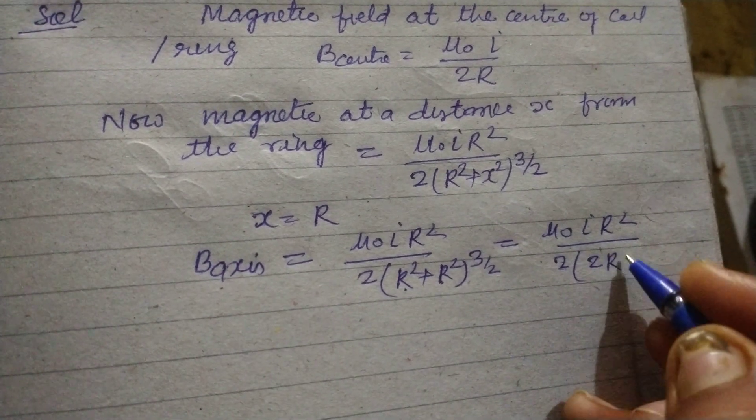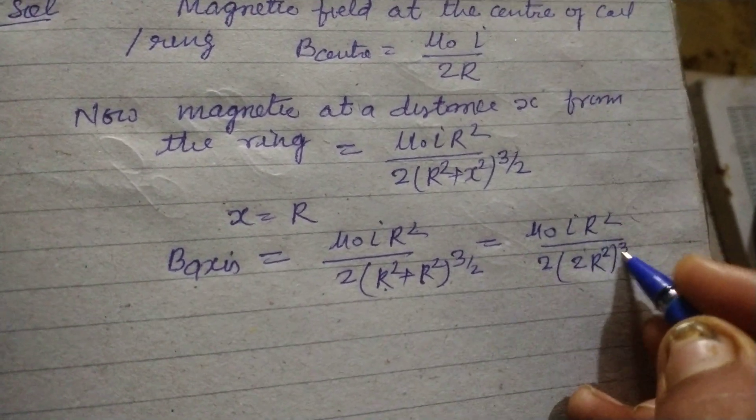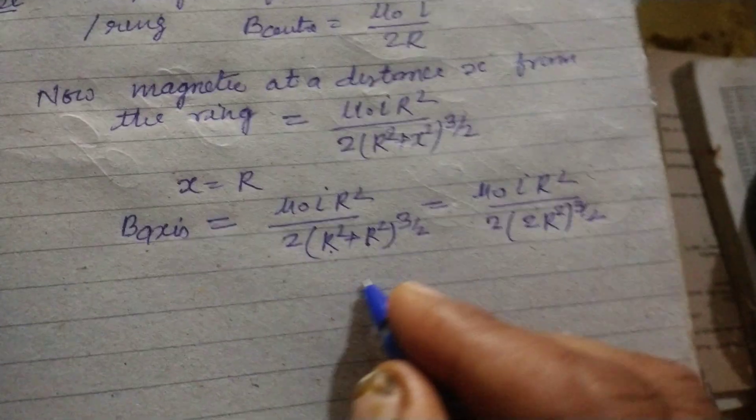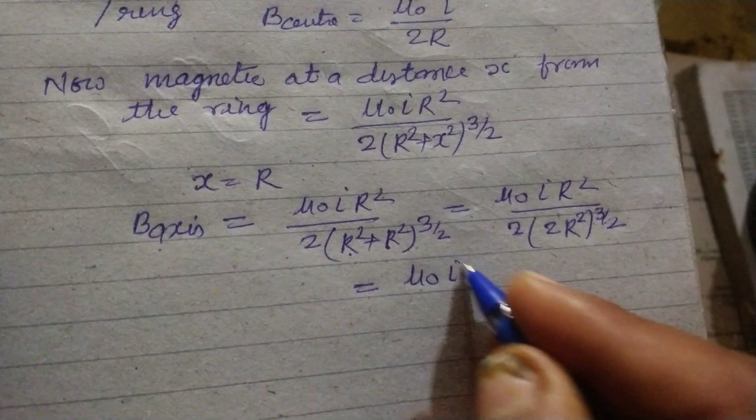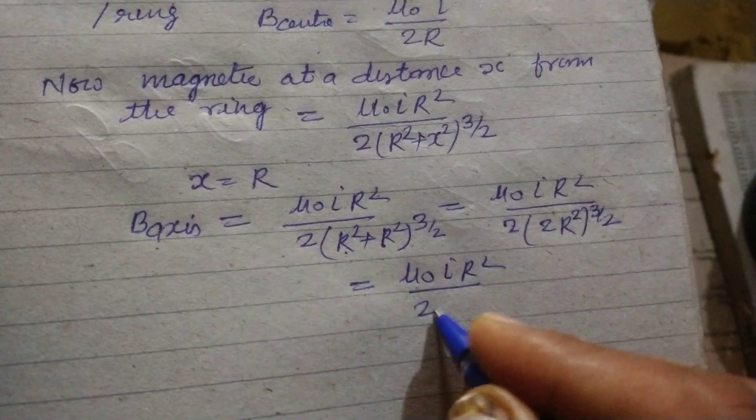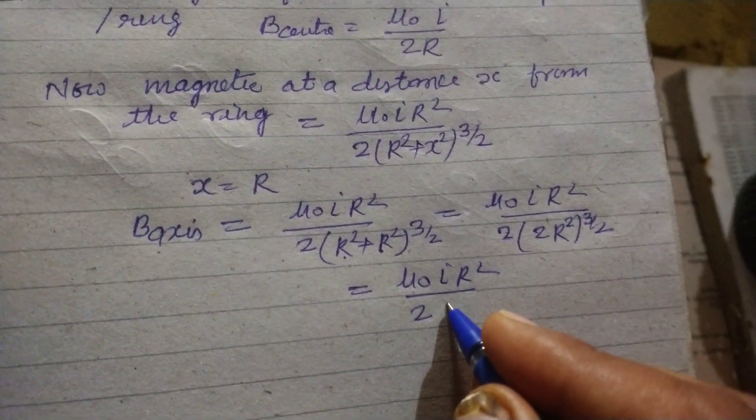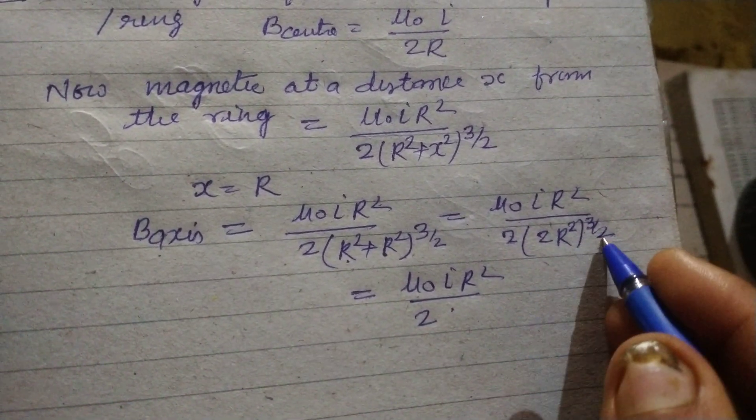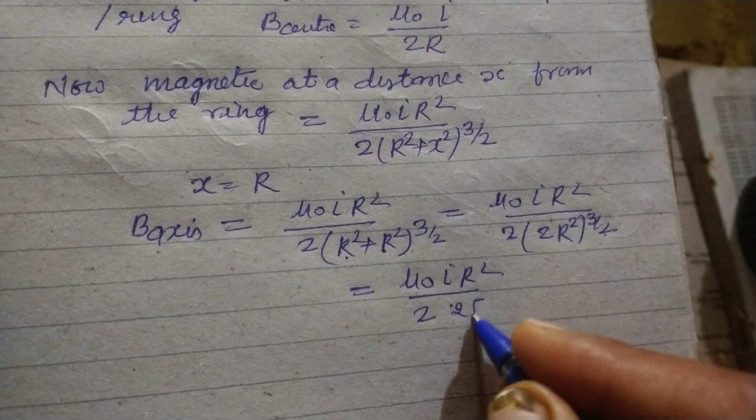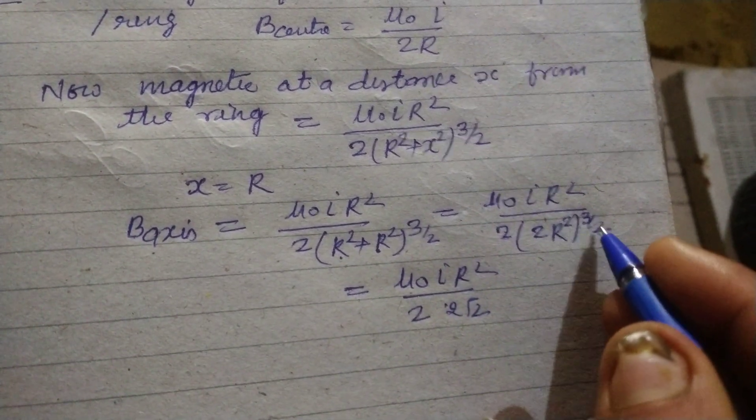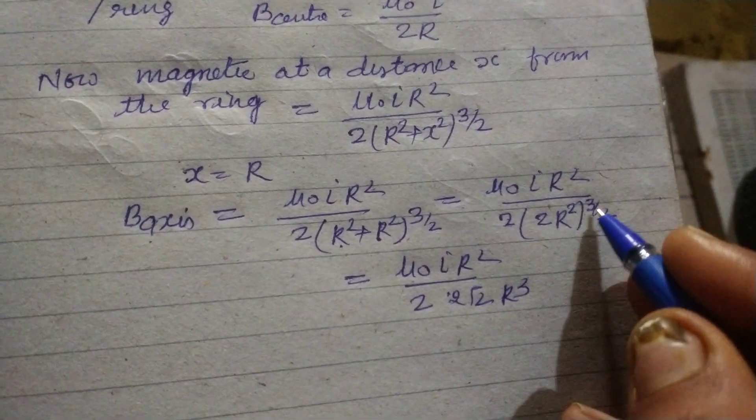So 2R² to the power 3 by 2. Therefore it will be μ₀IR² upon 2 times cube of 2 is 8 and square root is 2√2, so 2√2R³.